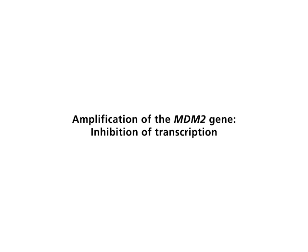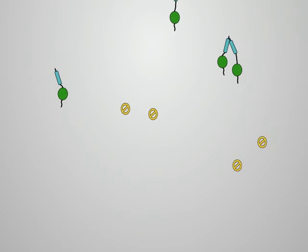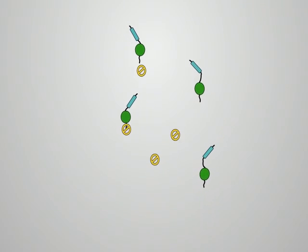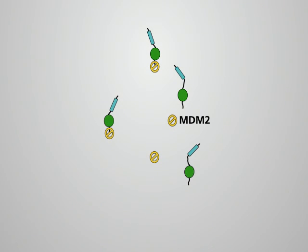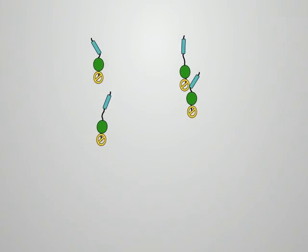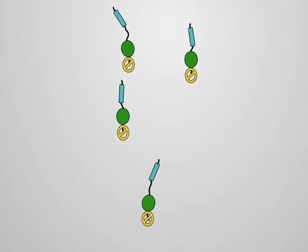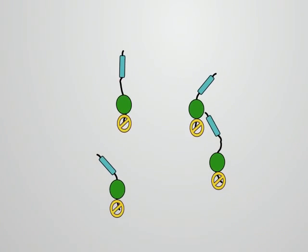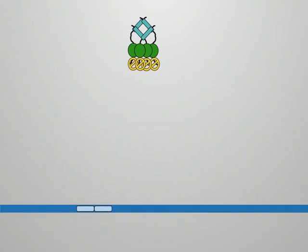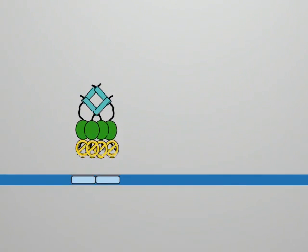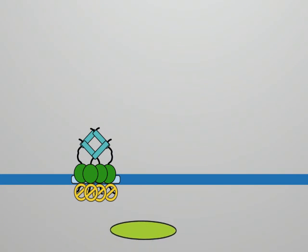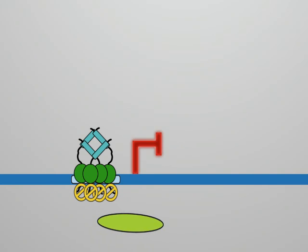Amplification of the MDM2 gene. Inhibition of transcription. The MDM2 gene is amplified in about one-third of human soft tissue sarcomas. The gene product, shown in yellow, binds to the aminoterminal transactivation domain of P53. MDM2 associated with the transactivation domain inhibits the binding of transcription factors to the transactivation domain. In this way, transcription of the target genes is blocked.